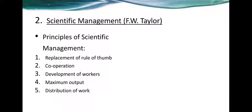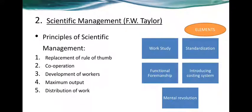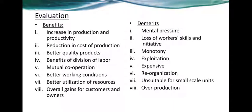For the application of these principles, five elements are given for scientific management: work study, standardization, functional foremanship, introduction of a costing system, and mental revolution among employees to improve the working of an organization. The evaluation of scientific management covers various benefits and loopholes of this approach.